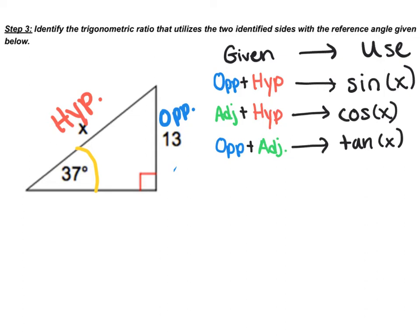For step three, we determine which trigonometric ratio to use based on the two sides and the given reference angle. Since we have the opposite and the hypotenuse, we are going to use the sine relationship. So we write sine — abbreviated as sin — of the angle, filling in 37, giving us sine of 37.